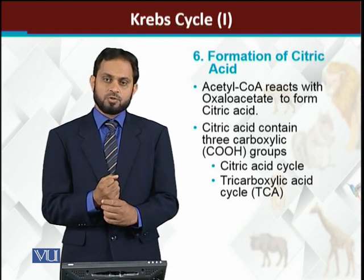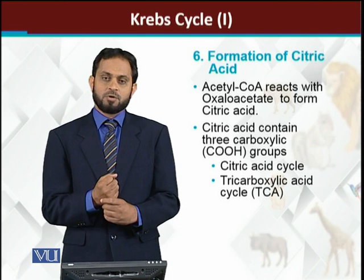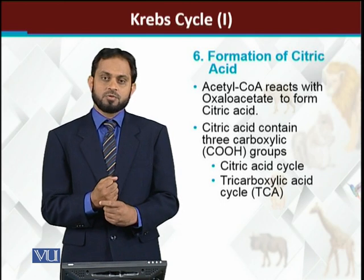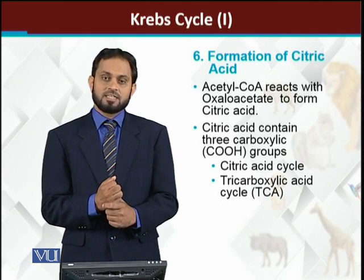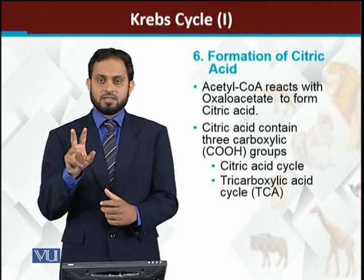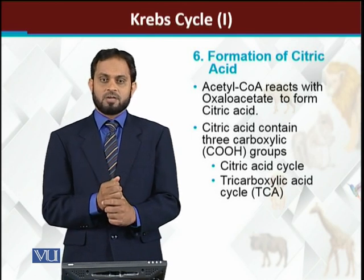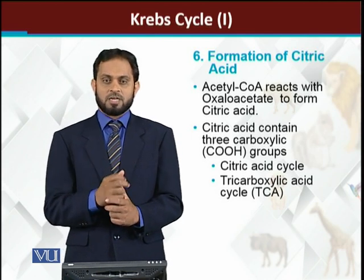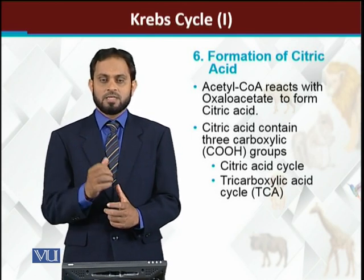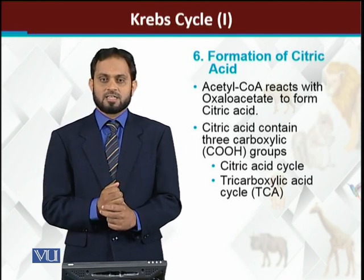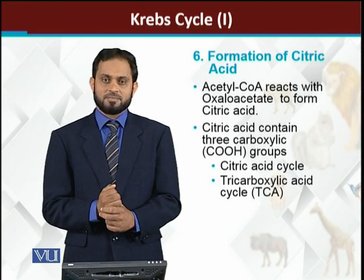Citric acid is a 6-carbon molecule, and interestingly, because citric acid is the very first molecule formed, we also call the Krebs cycle the citric acid cycle. Furthermore, because citric acid has three carboxyl (COOH) groups, we call it the tricarboxylic acid cycle.